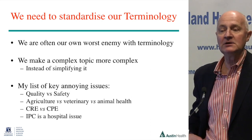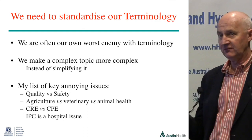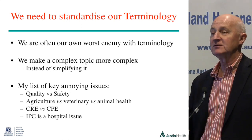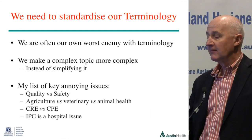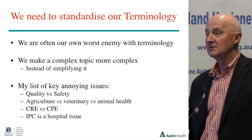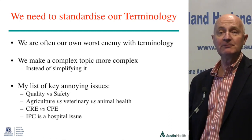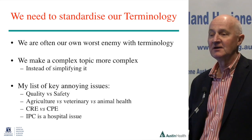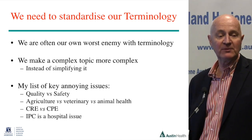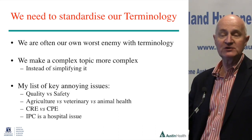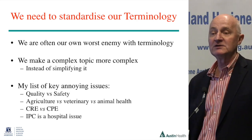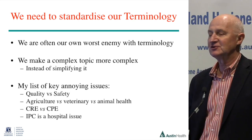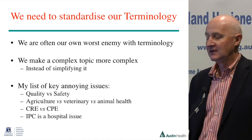Some examples of annoying issues: we use quality and safety interchangeably, and I'll come back to why they're actually different. If we're thinking about a One Health agenda, we talk about agriculture versus veterinary versus animal health — maybe we should simplify it to human health and animal health. Do we talk about CRE and CPE? I come from Victoria where we have CPE guidelines — carbapenemase-producing Enterobacteriaceae — instead of carbapenem-resistant Enterobacteriaceae. The new WHO guidelines stick to CRE, recognising that much resistance is due to carbapenemase-producing genes, but whether resistance is due to the gene or not, it's still bad and the intervention is the same.